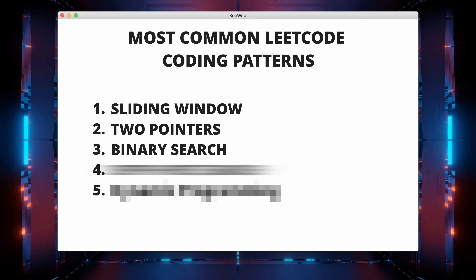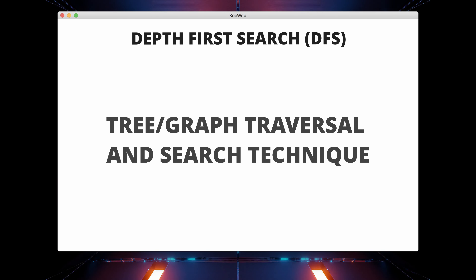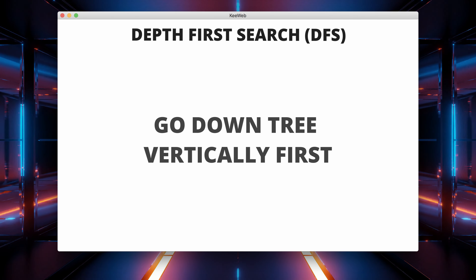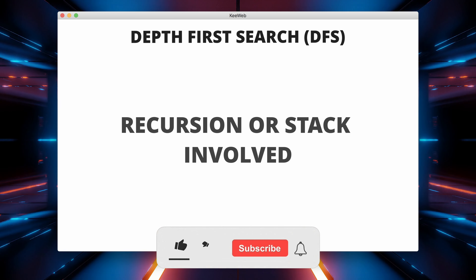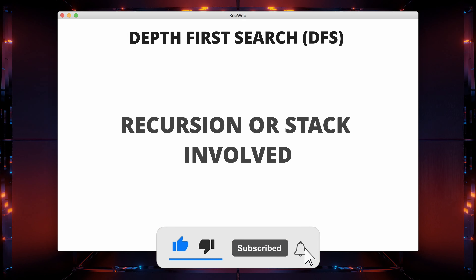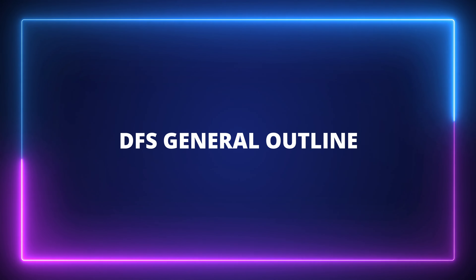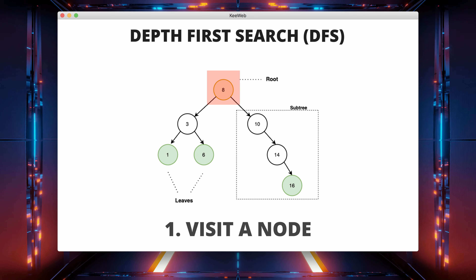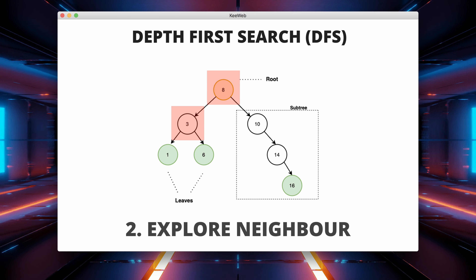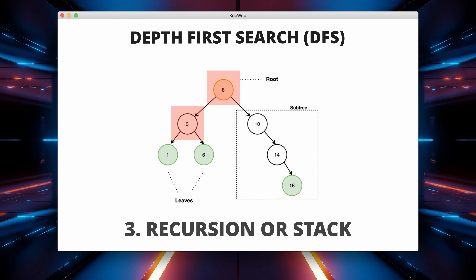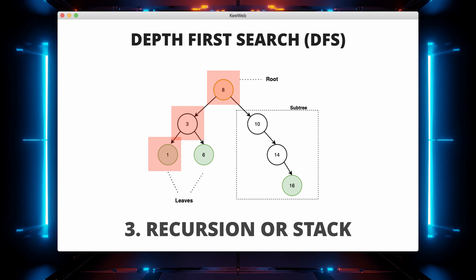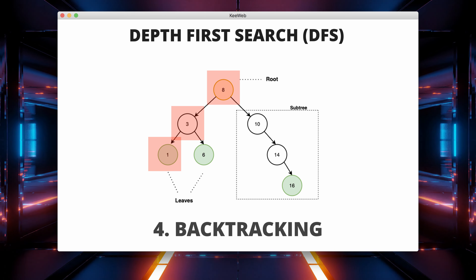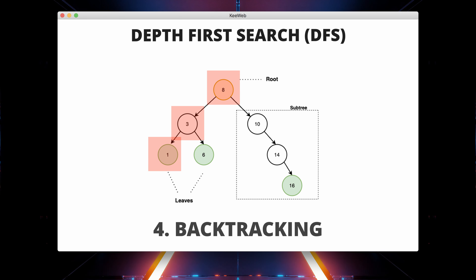Depth First Search, or DFS, is our next LeetCode pattern. DFS is a technique for traversing or searching through tree or graph structures by exploring as far as possible along each branch before backtracking. It often involves recursion or using an explicit stack to keep track of the nodes to be visited. Here is a general outline of how DFS works: first, visit a node — start at a given node and mark it as visited. Then explore the neighbors of the current node. For each unvisited neighbor, apply DFS recursively or use an explicit stack to visit it. Finally, backtrack — if you reach a node where no unvisited neighbors are left, backtrack to the previous node.